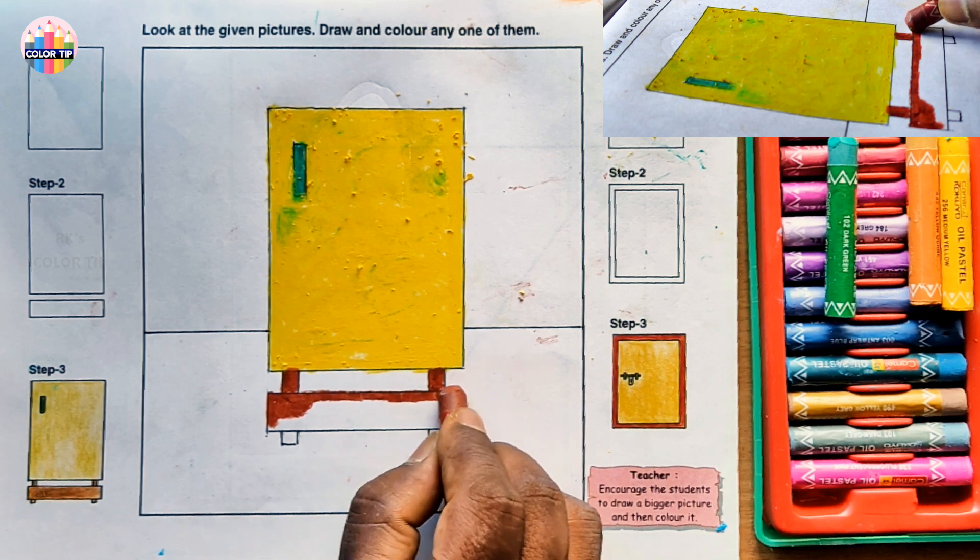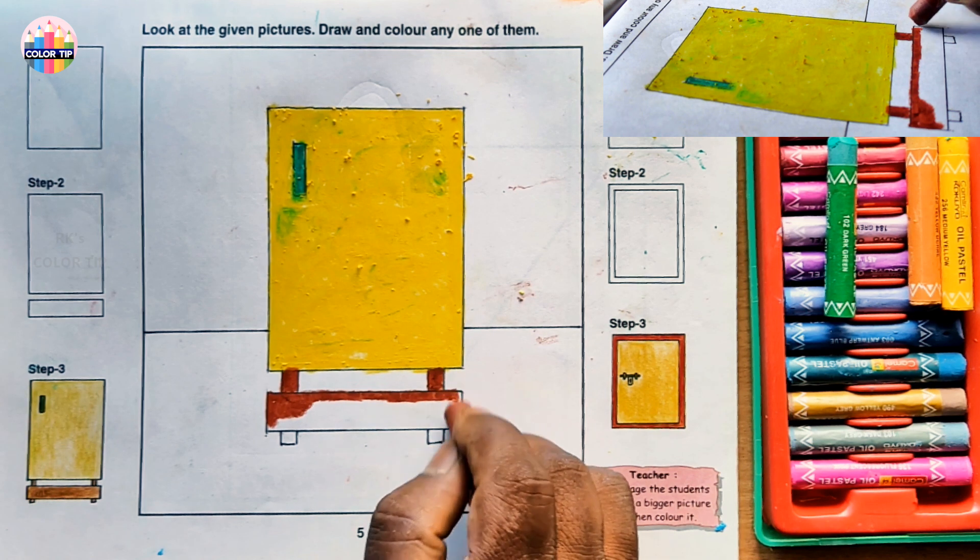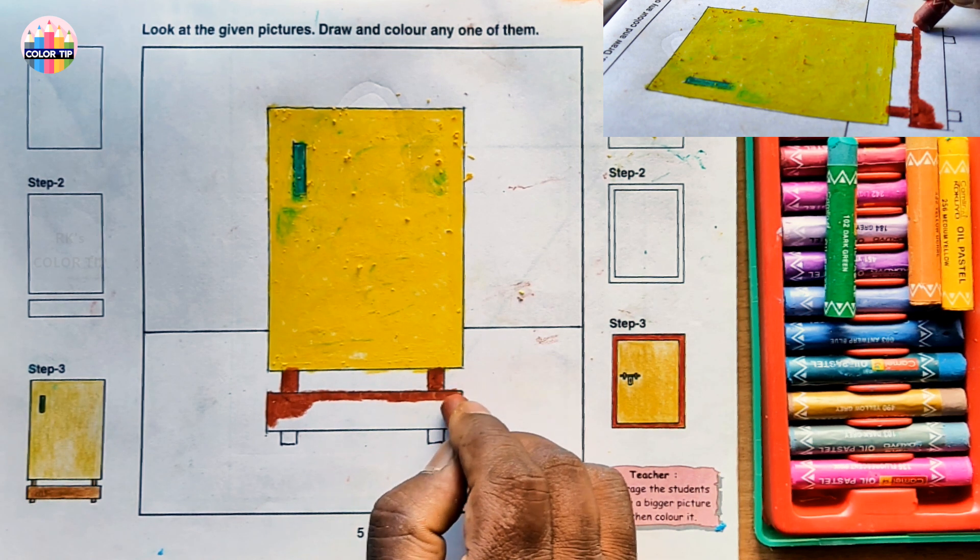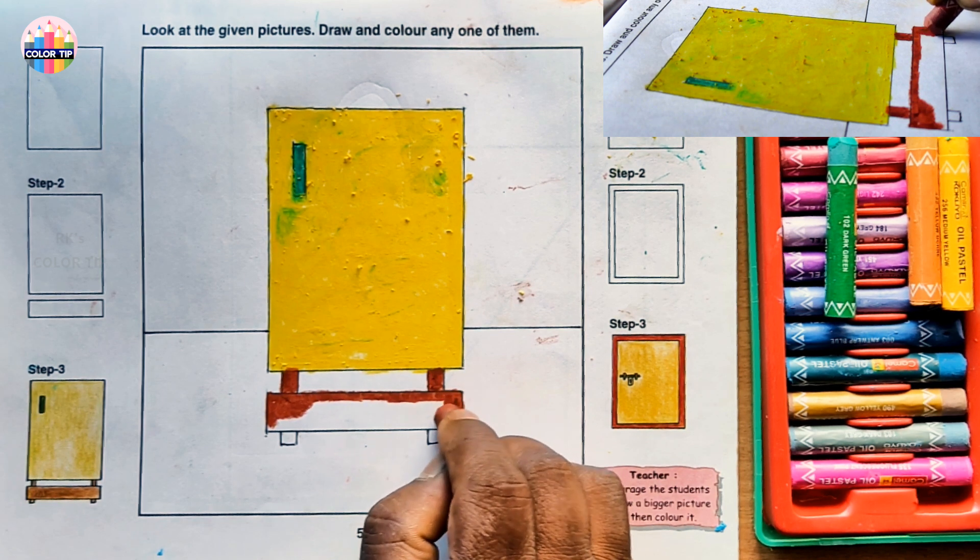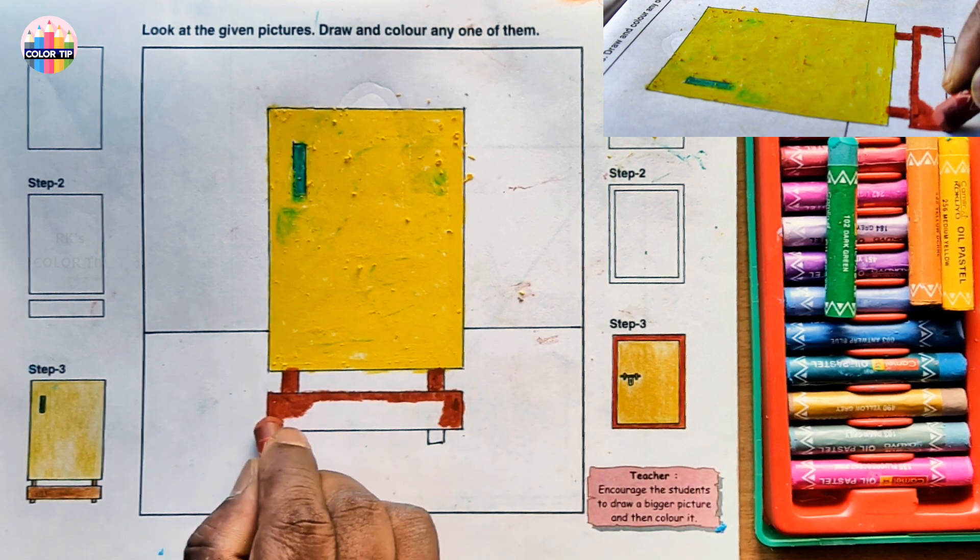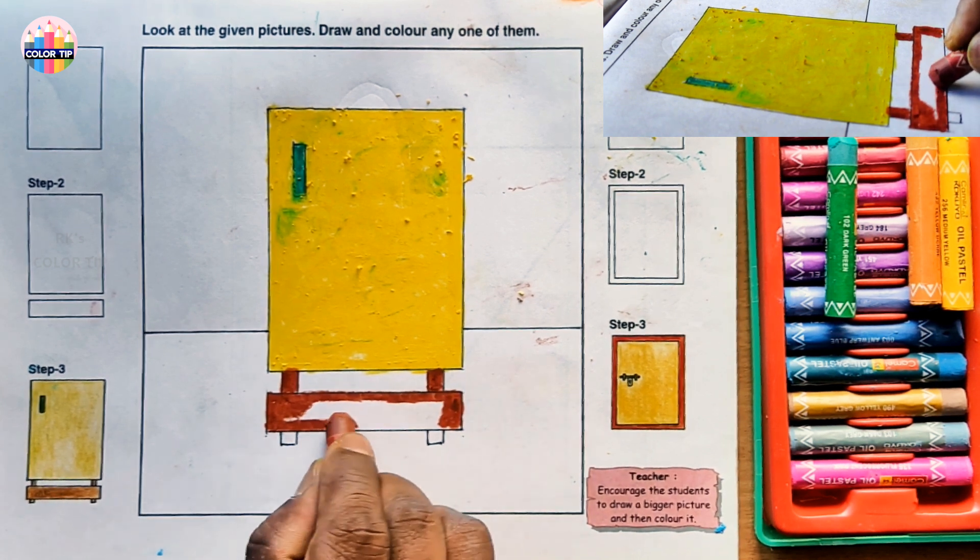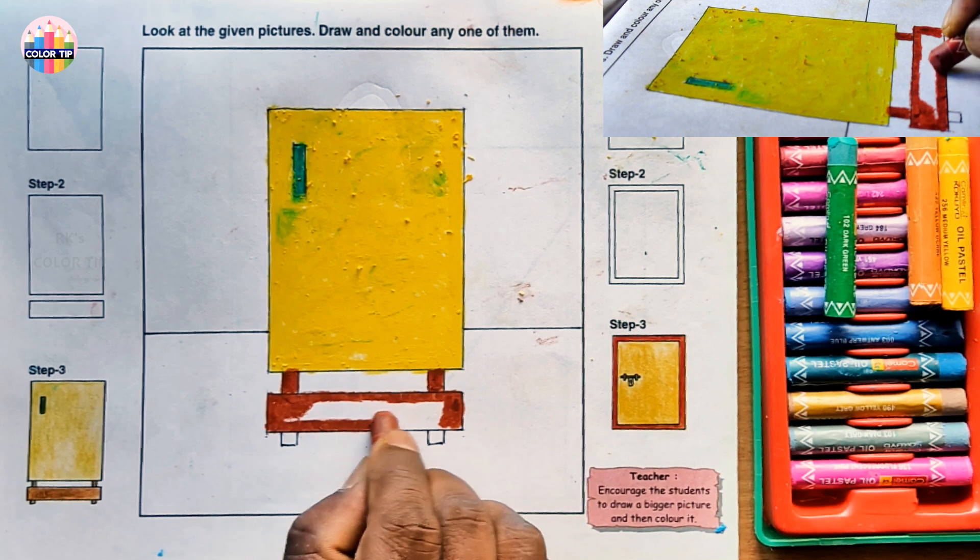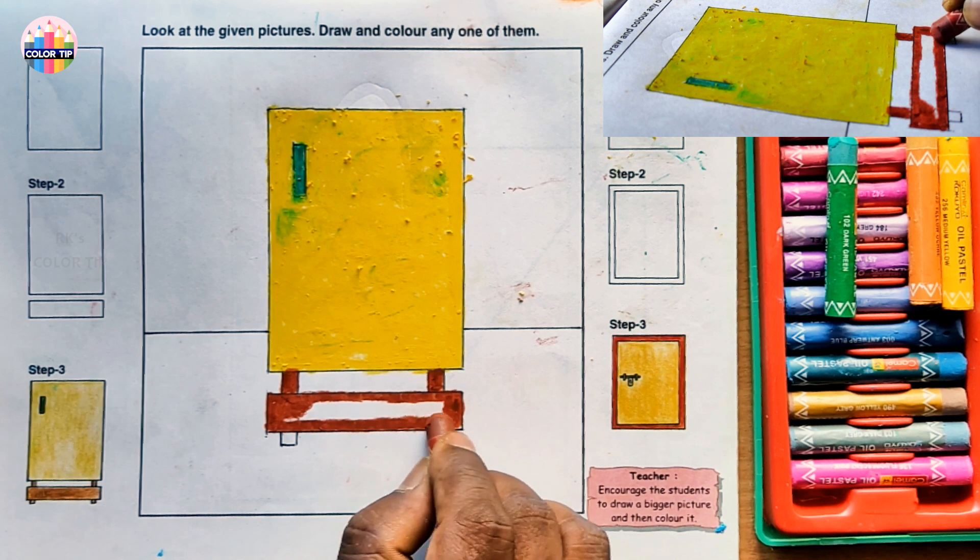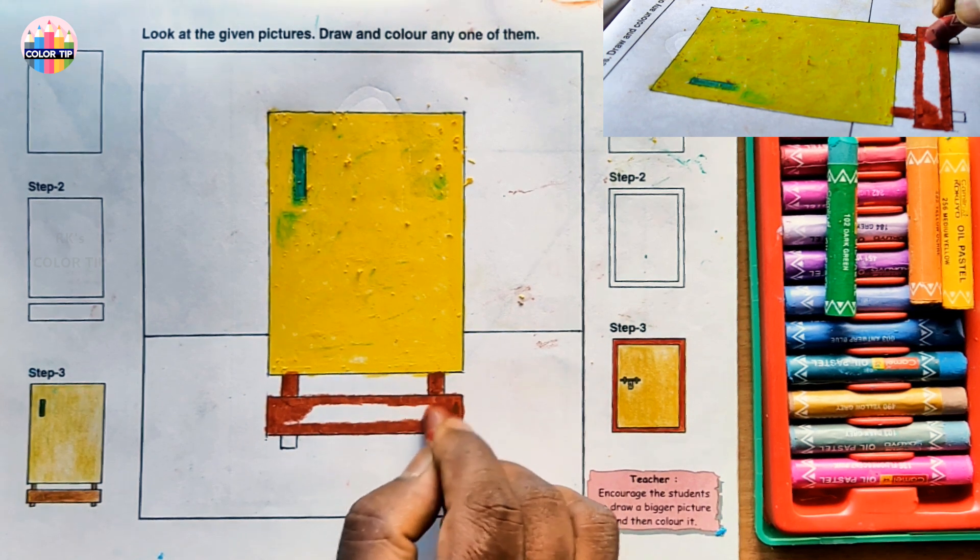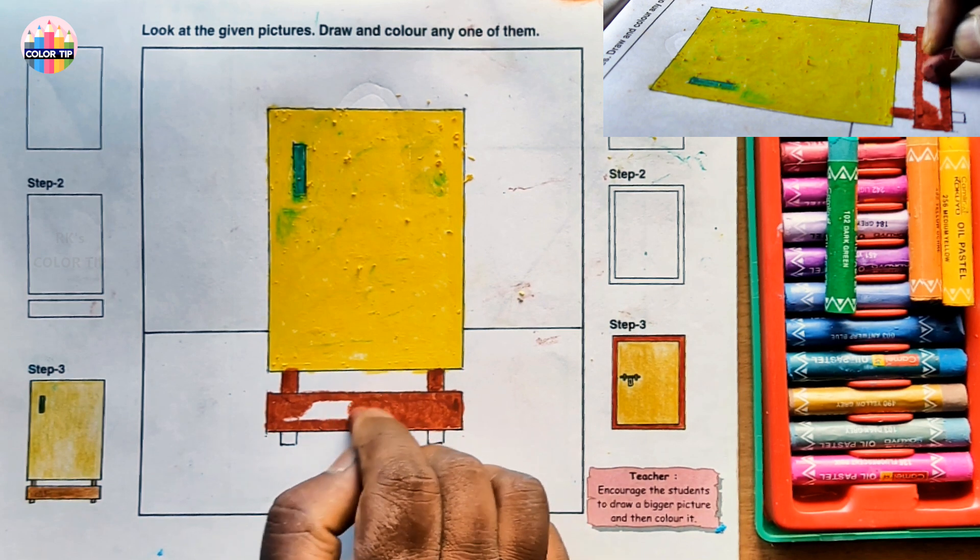So this is the horizontal line, sleeping line, so use left-right direction. Now this is the vertical line, I am using it in up and down direction again. Here it is left-right direction. Now you can fill it randomly in the middle with round direction or with small strokes.